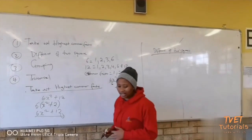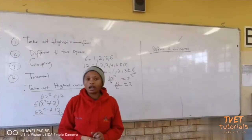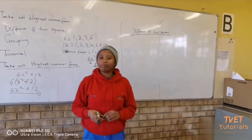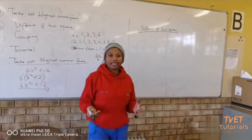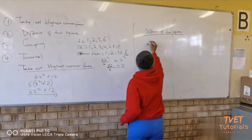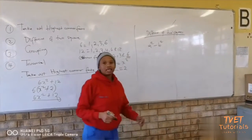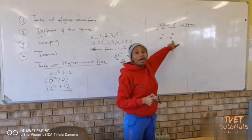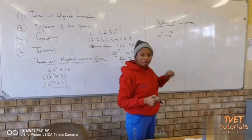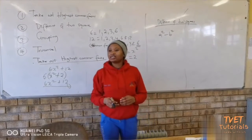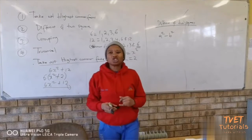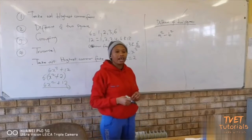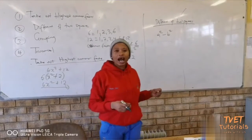A difference of two squares is an expression that has all perfect squares. That expression is a binomial, and the sign between those two terms must be negative. For example, a squared minus b squared. A is a perfect square with a square root, and b squared is also a perfect square. When factorizing a difference of two squares, first check whether you have a highest common factor. If you have one, take it out first.